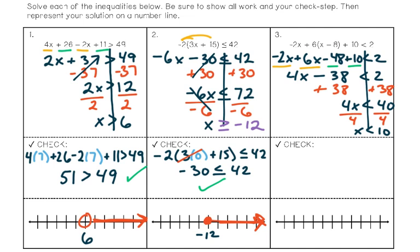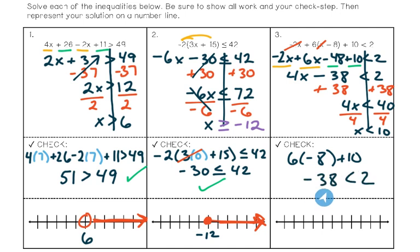I'll quickly check by picking 0, which is less than 10. Going back to the original inequality, I plug in 0 and get 6 times negative 8 plus 10, which makes negative 38, and that should be less than 2 — yes, that's true. To graph, I plot 10 on the number line with an open circle since it's a strict less-than, and shade to the left.